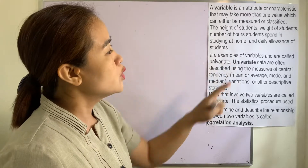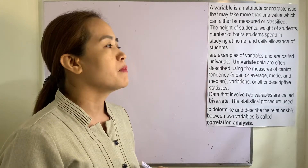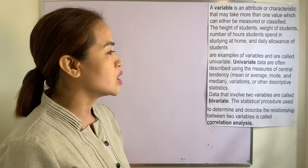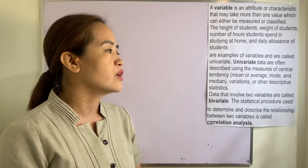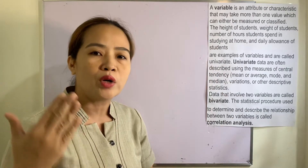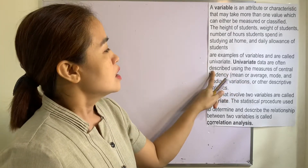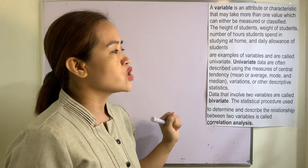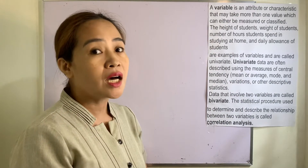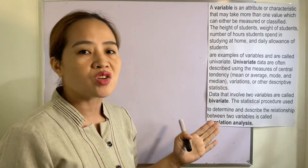Univariate data are often described using the measures of central tendency — mean or average, mode, median — or other descriptive statistics. When we say univariate, it will involve only one variable, and it uses these measures of central tendency: the mean, the median, and the mode. Take note that mean and average are the same.